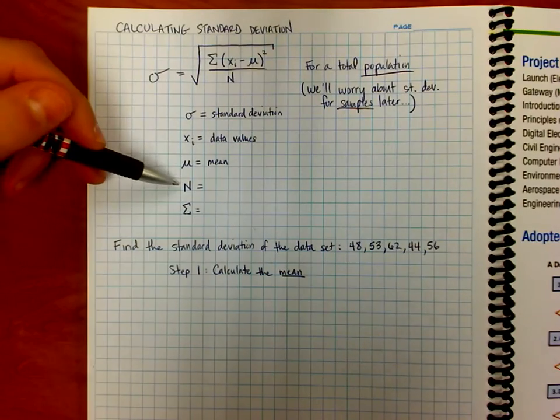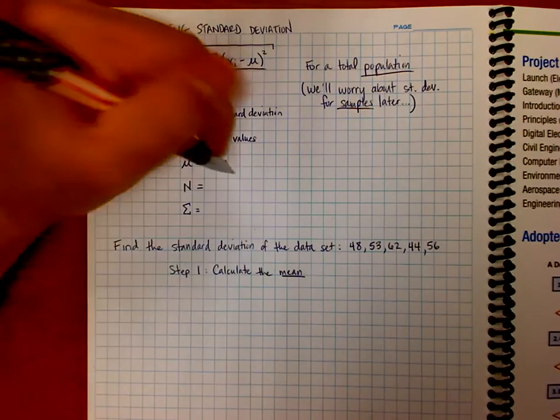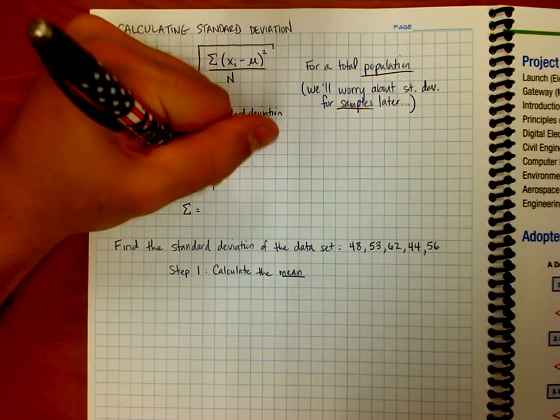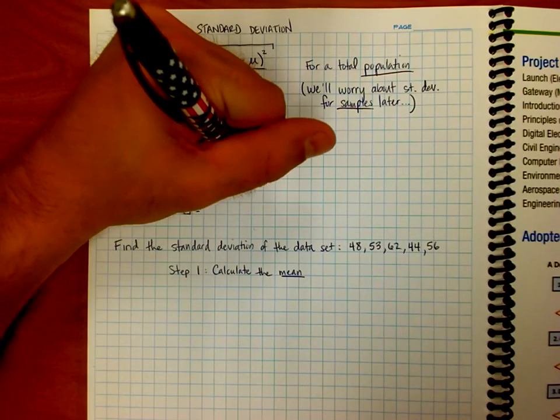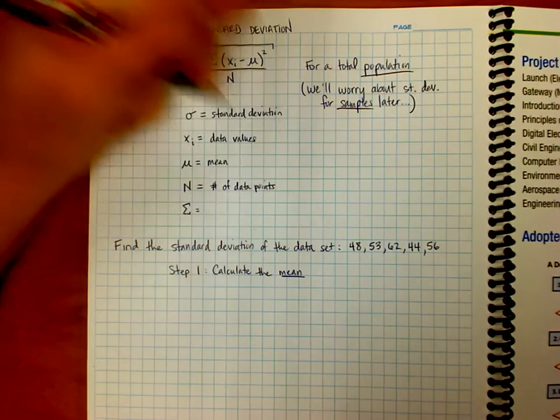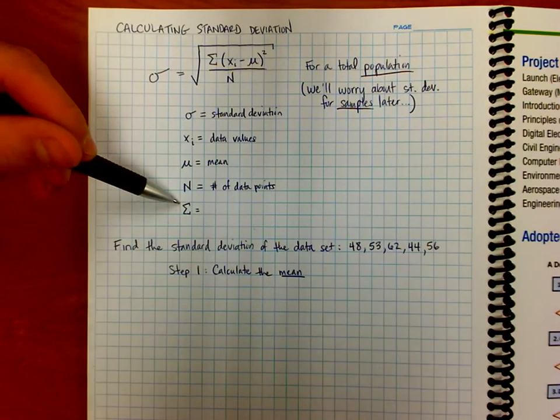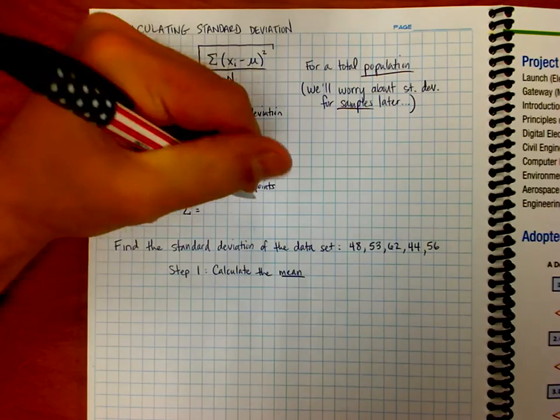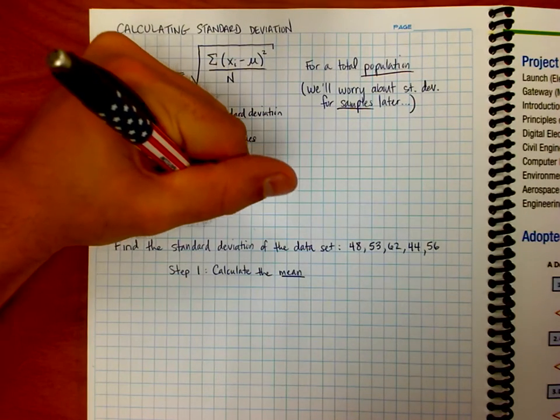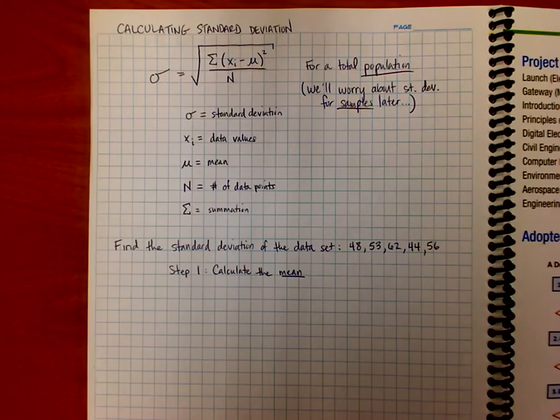And then we have N, which stands for the size of our population. In this case, it's like how many data points do we have? Right? So we're just going to say the number of data values that we're working with or data points. And this thing down here is the Greek letter sigma. So it's like an S and it stands for sum. So that means it's like a summation. So we're going to add some stuff up.